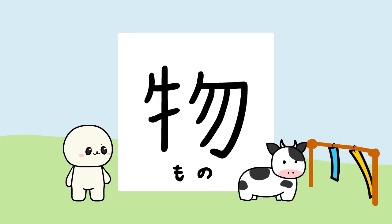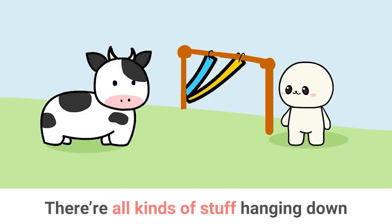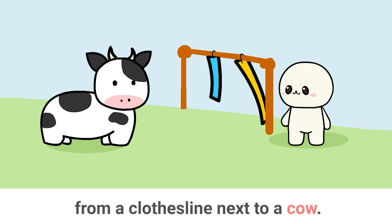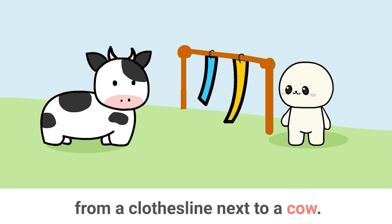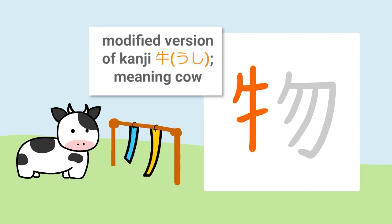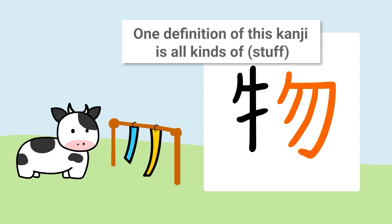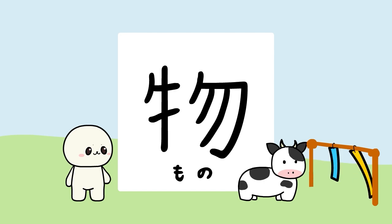First kanji is mono. This image might help you memorize this kanji. There are all kinds of stuff hanging down from a clothesline next to a car. This is a modified version of kanji ushi meaning kau. One definition of this kanji is all kinds of. This kanji is mono.